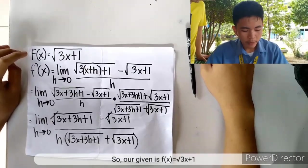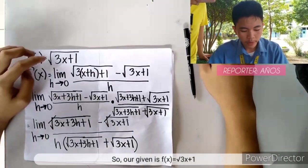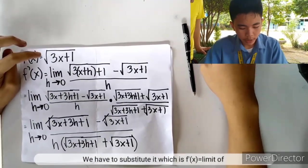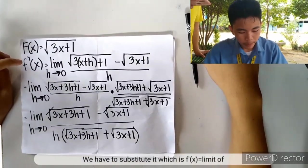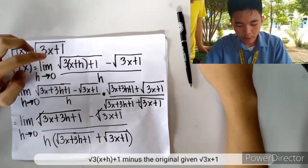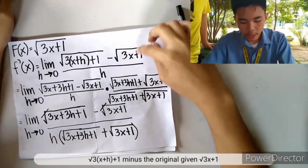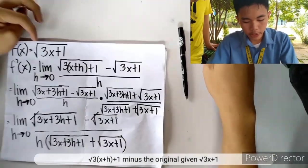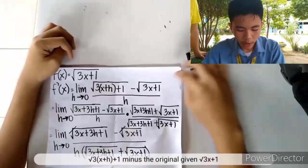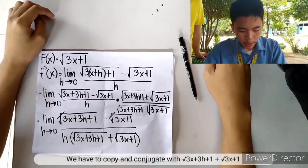Our given is f(x) equals the square root of 3x plus 1. We substitute to get f prime(x) equals the limit of the square root of 3(x+h)+1 minus the square root of 3x+1, over h as h approaches 0.